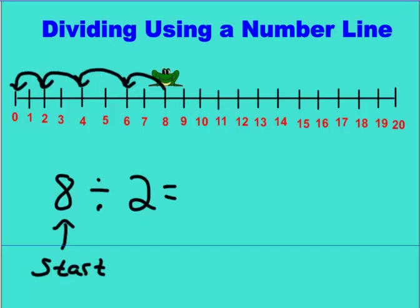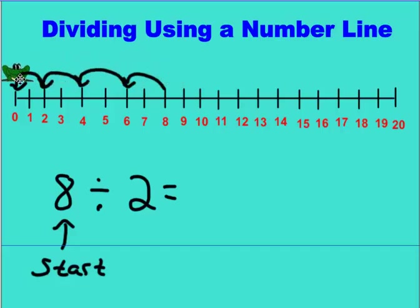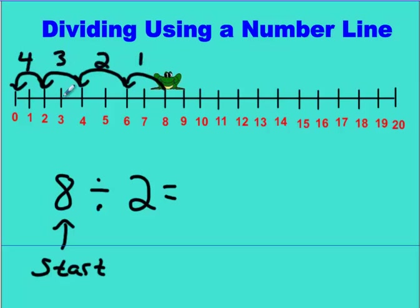Now how do we get the answer? After you've taken your frog and jumped him here, jumped him here, jumped him there, and jumped him there, how do you figure out what the answer is? It's simple — you count the jumps. You got one jump, two, three, four, and that's your answer. You're finished. It's that simple.